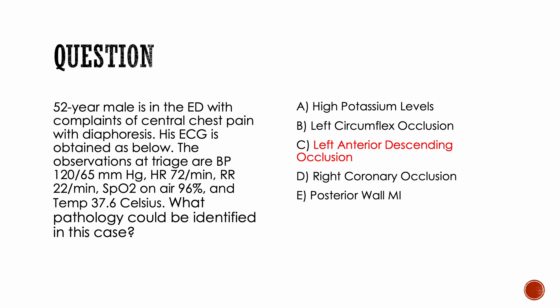The correct answer here is option C — left anterior descending occlusion. I hope you got it right. For more ECG videos, click on the 'i' button. Please subscribe, like, and share. Thank you for watching, good luck for your examinations, stay blessed, peace.